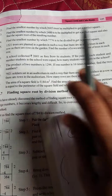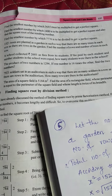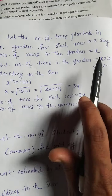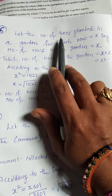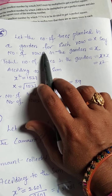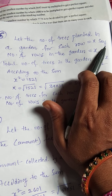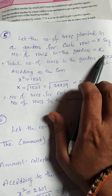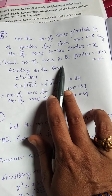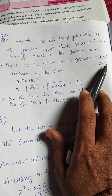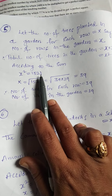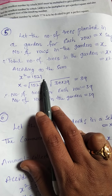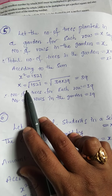Here, fifth one — solution. Let the number of trees planted in each row be x, and let the number of rows in the garden also be x. Total number of trees in the garden equals x into x, which is x squared. According to the problem, x squared is equal to 1521.